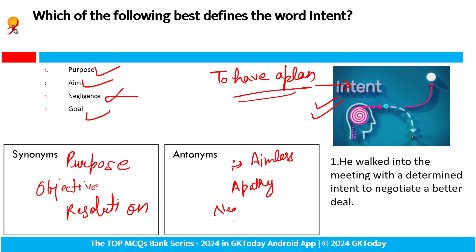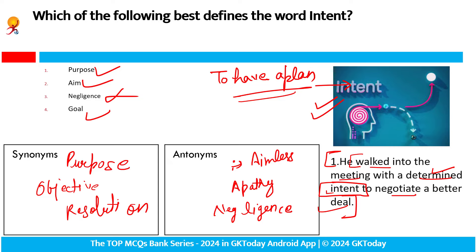Kuch nahi pata — negligence, kya iska antonym hai — indifference. He walked into the meeting with a determined intent to negotiate a better deal. So meeting mein woh is prakar aaya — with a determined, nishche karke ki kya karna hai — negotiate karke better deal ko crack karna hai. Yehi uska intent hai: to have a plan.